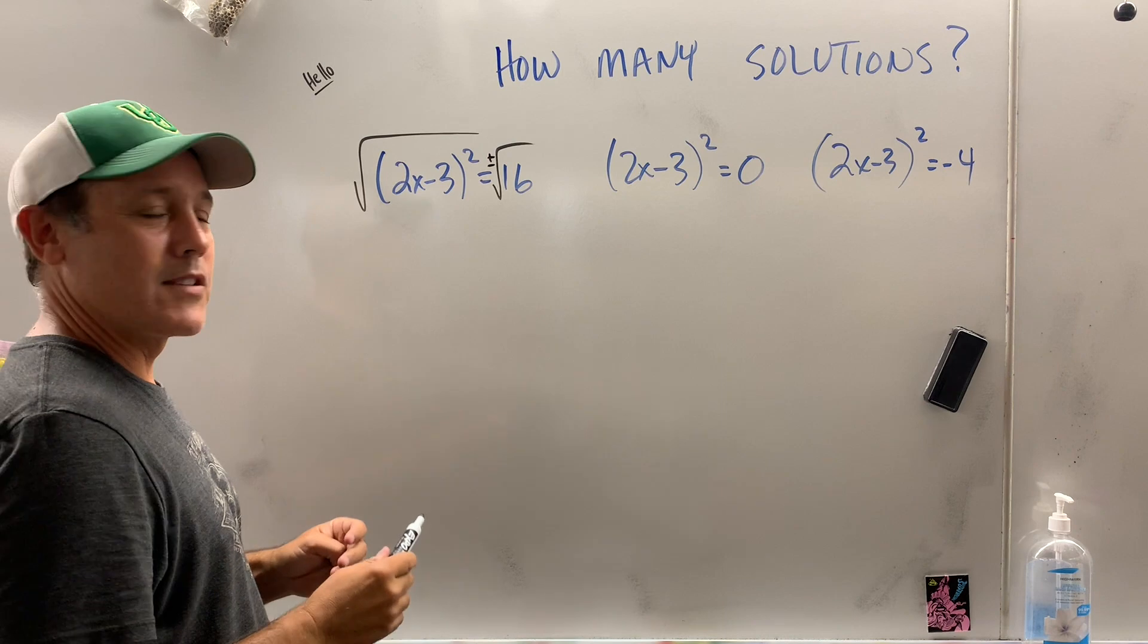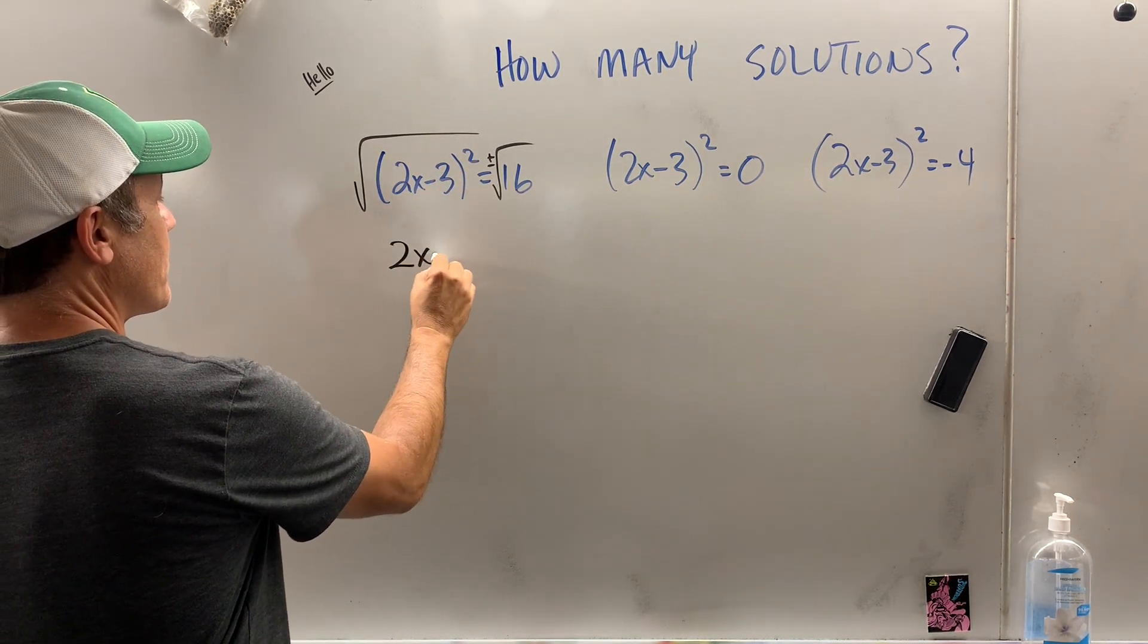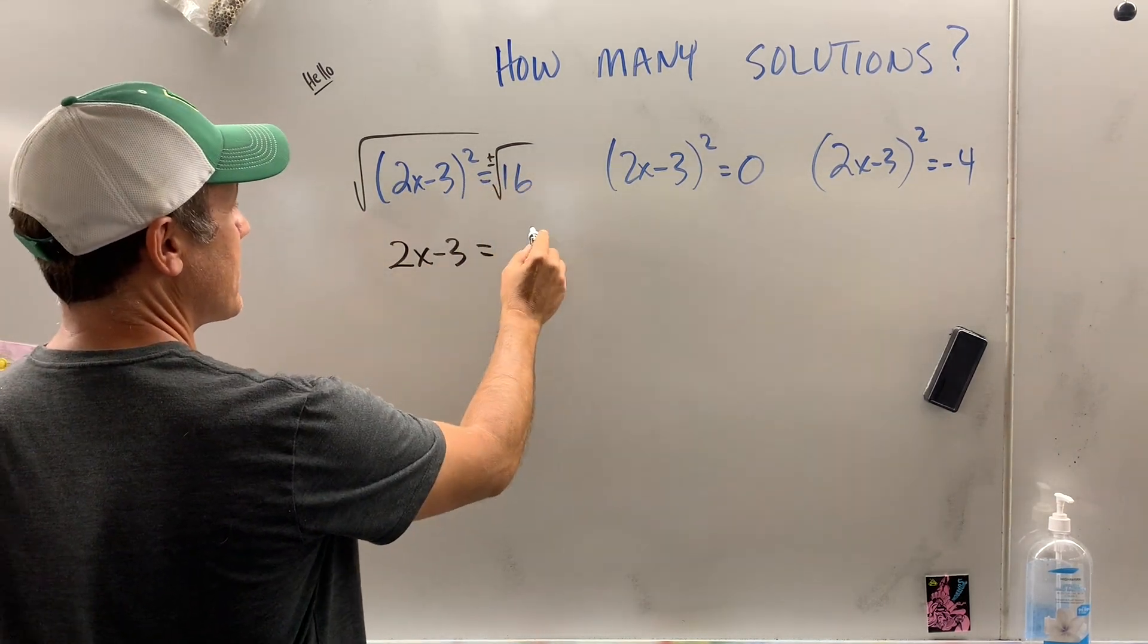They never told you that in grade school. When I take the square root of a square, it simply gets rid of the square. And then what is the square root of 16? It's 4.